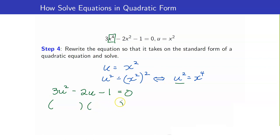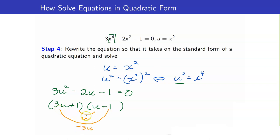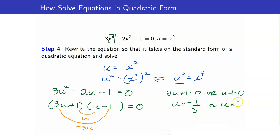We factor it as (3u + 1)(u - 1). Check: 1 times u is u, and 3u times negative 1 is -3u; when we add, we get -2u. Correct. This equals 0, so we set 3u + 1 = 0 or u - 1 = 0. Solving, we get u = -1/3 or u = 1. But we are not yet done — we want to solve for x, not u.